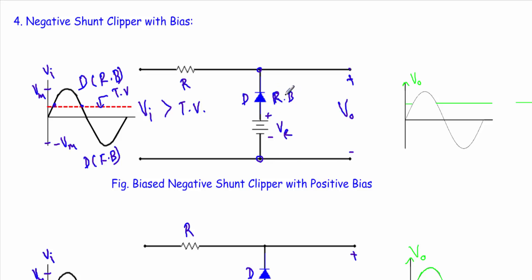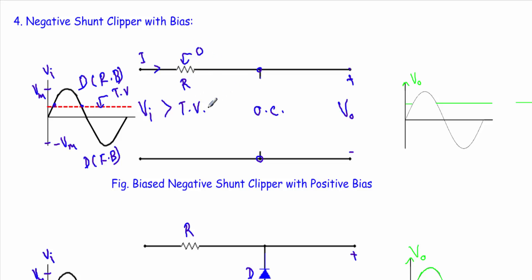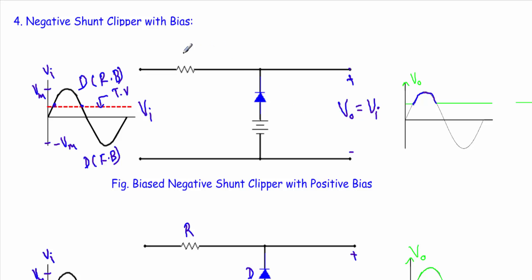When the input voltage is greater than the transition voltage, the diode will be in reverse bias. I can replace the diode with an open circuit, which means the diode branch is discarded. With the diode replaced by an open circuit, the current in the circuit I will be equal to zero, so the voltage drop across the resistor will be equal to zero. Therefore, when the input voltage is greater than the transition voltage, the input voltage appears directly across the output terminal — our output voltage Vo equals Vi — and the output follows the same wave shape as the input.